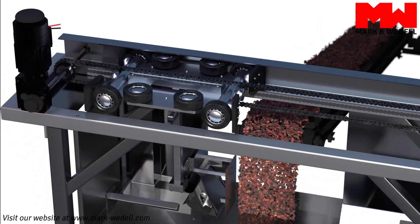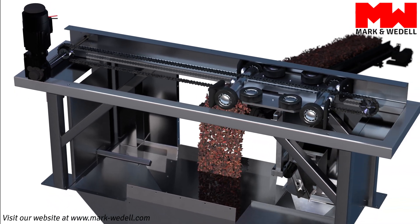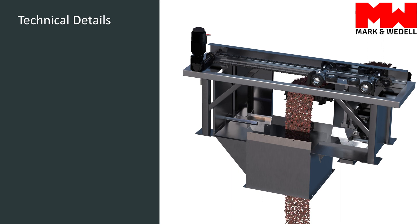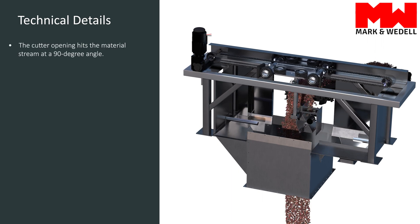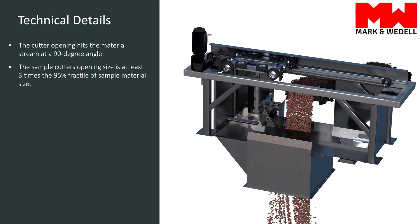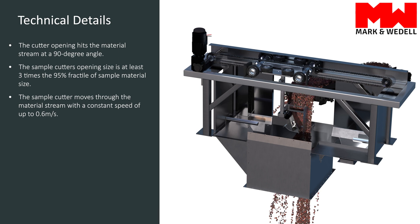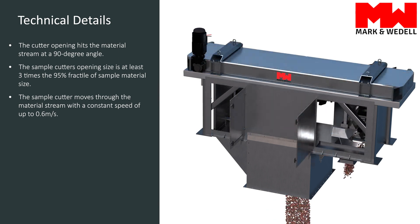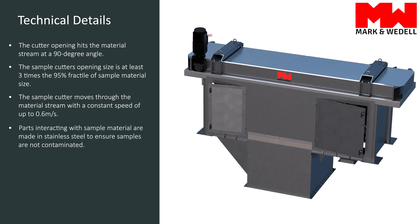To create representative samples, each particle must have an equal chance of being extracted by the Cross-Stream Sampler. Mark and Weddell's Engineering takes care of that. The cutter opening meets the material stream at a 90-degree angle, while the opening size is at least three times the nominal top size of the material. The sample cutter moves through the material stream with a constant speed of no more than 0.6 meters per second, and parts interacting with sample material are made in stainless steel to ensure samples aren't contaminated.